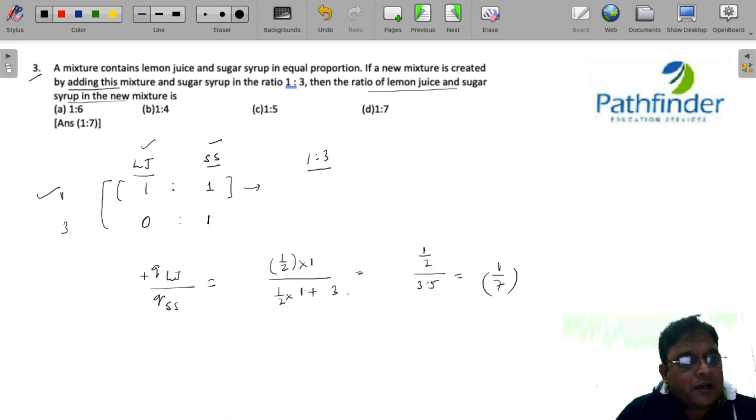So the options are, the answer is, the ratio of lemon juice and sugar syrup in the new mixture must be 1 as to 7. Answer D.